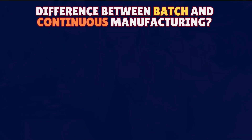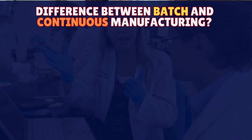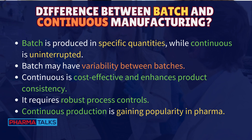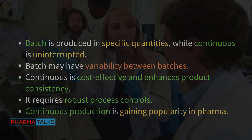Difference between batch and continuous manufacturing? Batch is produced in specific quantities, while continuous is uninterrupted. Batch may have variability between batches. Continuous is cost-effective and enhances product consistency. It requires robust process controls. Continuous production is gaining popularity in pharma.